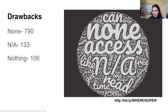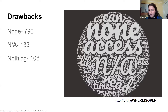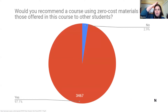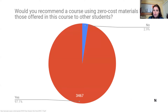We didn't just ask about good things — we asked about drawbacks. But the biggest answers for drawbacks were that there were no drawbacks. These were not required responses — students could have said nothing — but they wrote 'none,' 'nothing,' or 'N/A.' And 97.1% of our respondents said they would recommend the course to a friend. When things get hard or meetings get long, I like to look at this data.